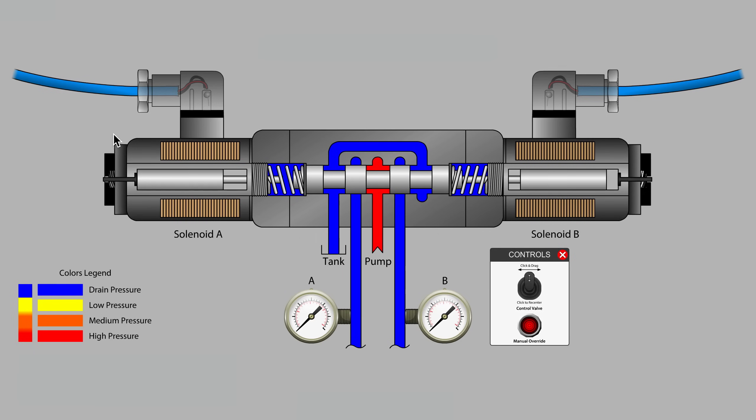In this video, we will look at how the electrical solenoids operate a basic spool-type directional control valve, and we'll look at the mechanical override feature that lets you test for basic functioning of the valve.